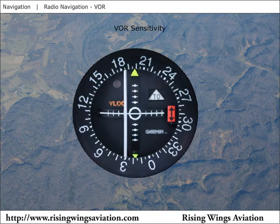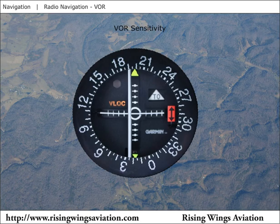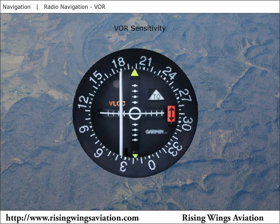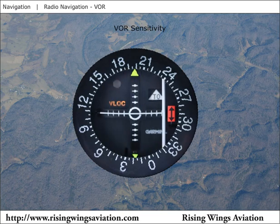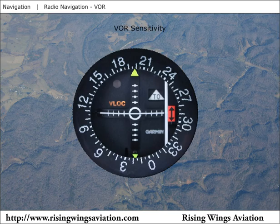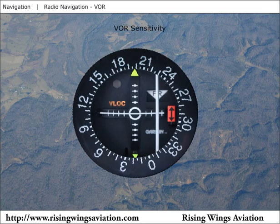When overflying a VOR, the needle will become more and more sensitive until, when very close to the NAV aid, the needle will likely swing all the way to the left or right. At these close distances, simply remain on your heading. The TO FROM flag will change to an OFF indication as you pass the station. Once on the other side, the FROM flag will appear. As you track outbound from the station, the needle will become less and less sensitive with your increasing distance from the VOR.